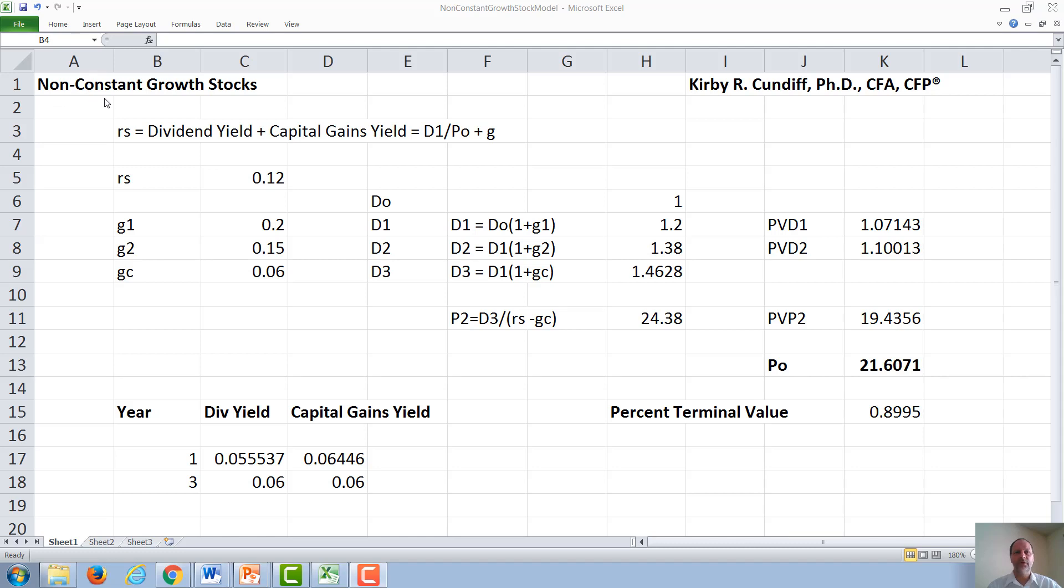In this video, we will discuss the non-constant growth stock model. In our example, we will look at a supernormal growth stock that starts out at a high growth rate of 20%, gradually decreasing from 15% down to 6%. This would be the situation like in the tech industry when a company first starts and is successful.